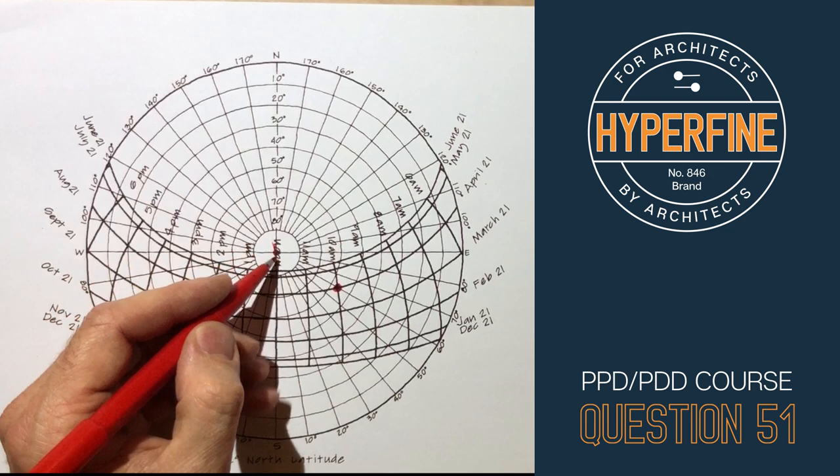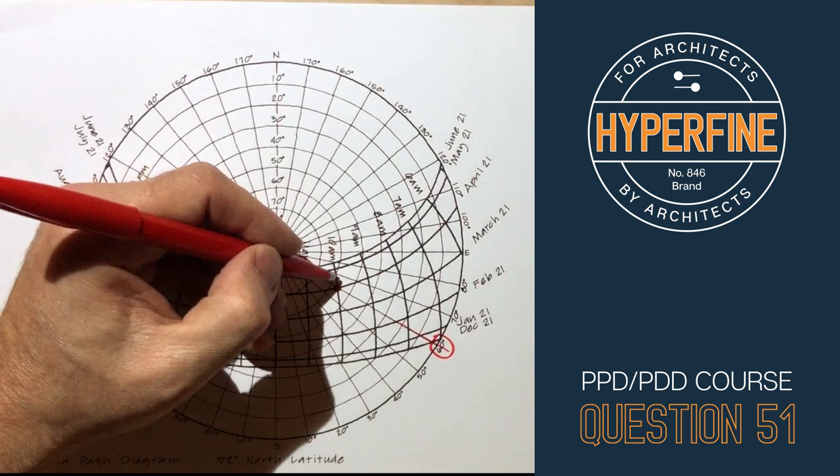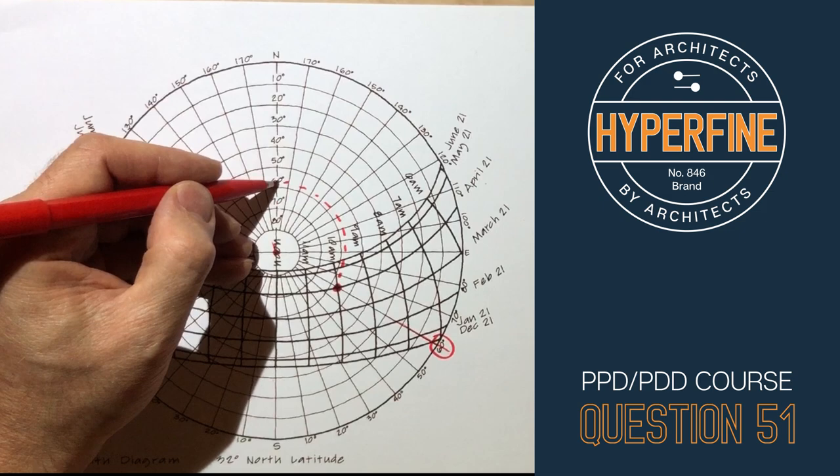So we read from the center, and we go out along these different lines to find the azimuth, so that's the azimuth, and then we follow these circles around to find the altitude, which is the height.